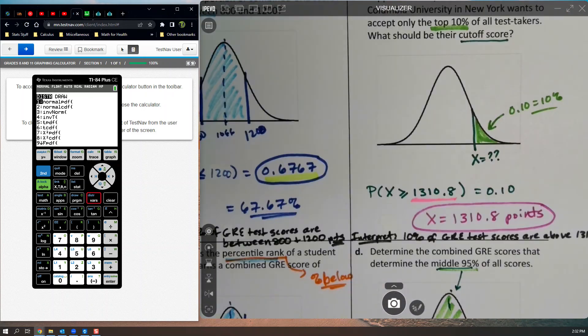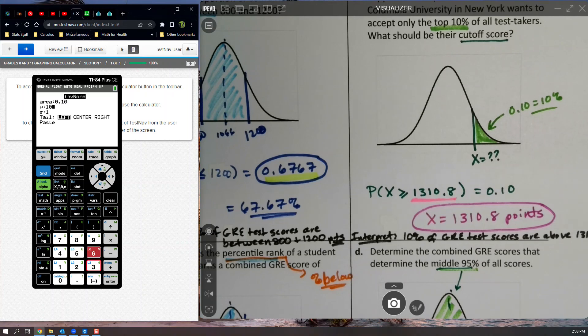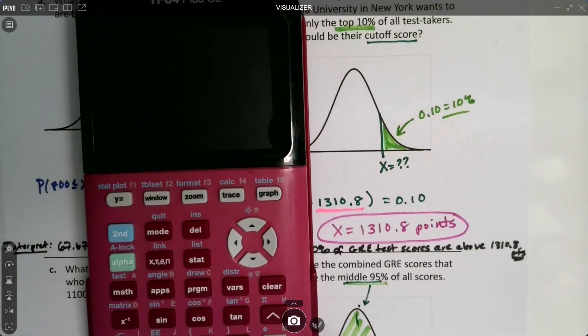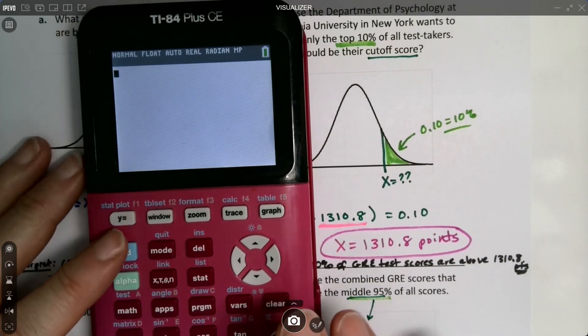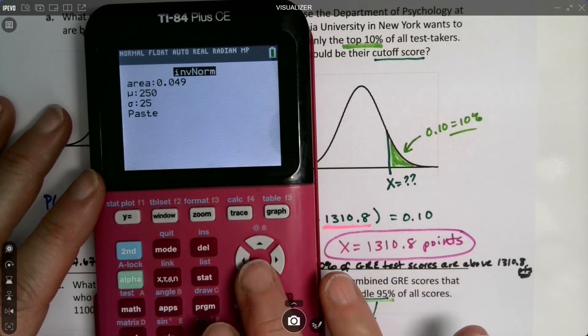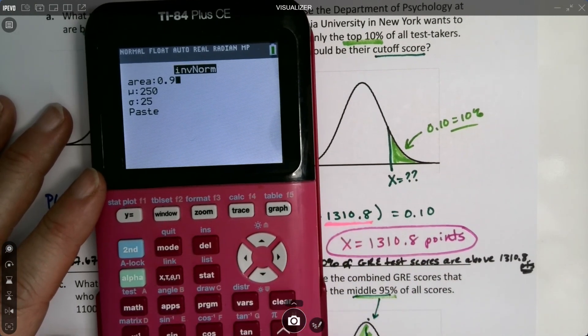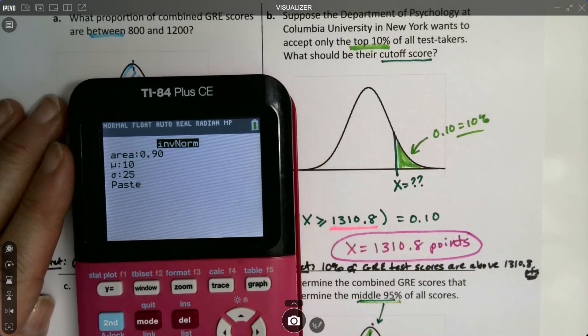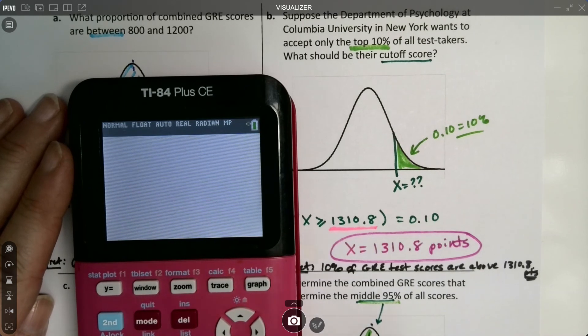So you could use 0.10 on the new ones and then say 1066 and 191. So if you have a new calculator, you can do this. And you would just tell it that's a right area. Lovely. Paste. Enter. No problem. The old calculators, you're in a little bit more of a pickle. So you're going to have to do inverse norm, 0.90. Because you need this area over here. 0.90, because it's always doing the area to the right, or to the left, no matter what. So paste, enter.